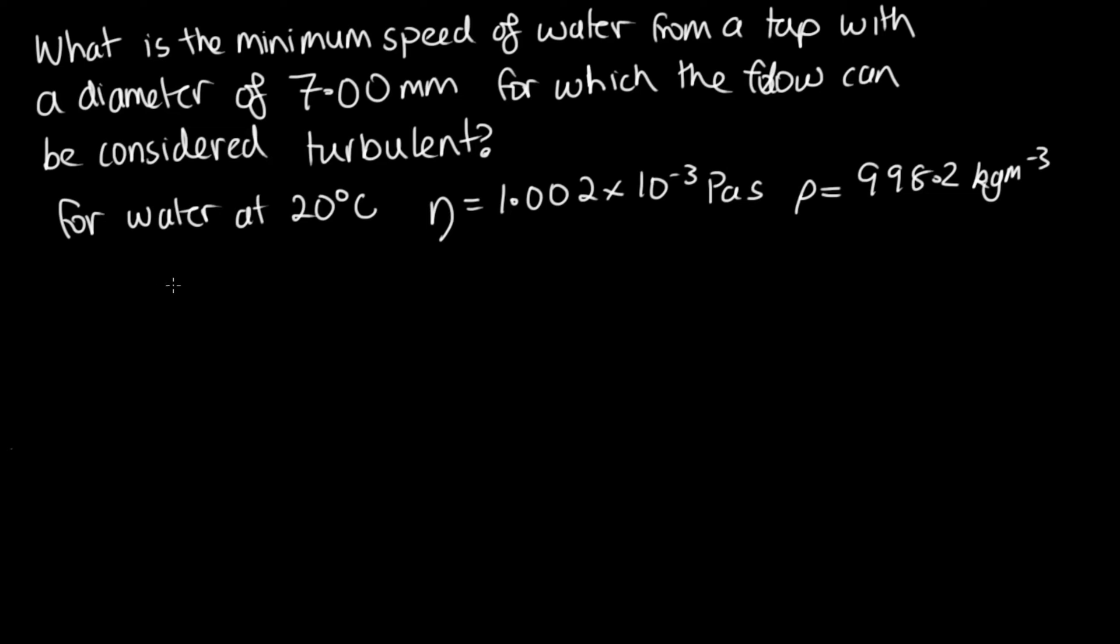To answer this, we're going to need to use Reynolds number. Reynolds number is given by the density times the velocity times the diameter over the viscosity. We know that for turbulent flow, we need a Reynolds number of 4,000 or above. What we're trying to find in this case is the velocity. So let's rearrange this equation to make the velocity the subject. We've got that the velocity is equal to Reynolds number times the viscosity divided by the density and the diameter.